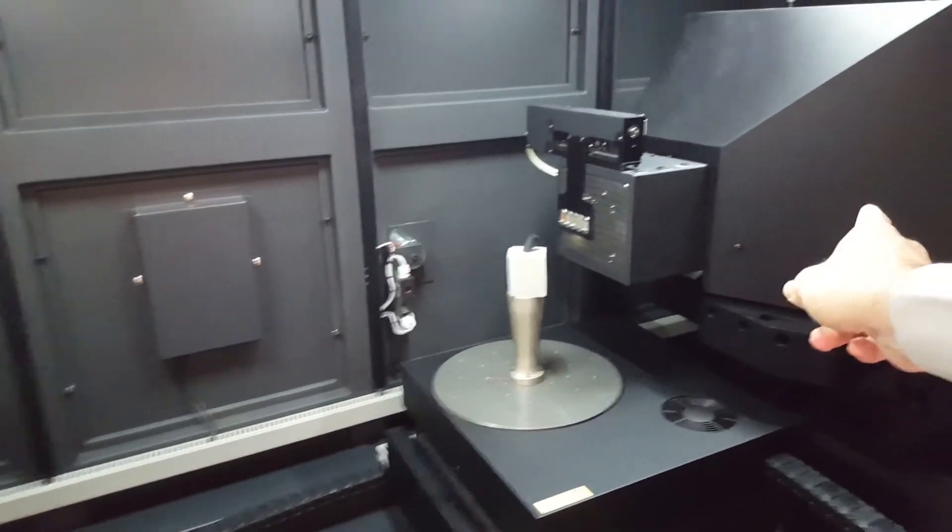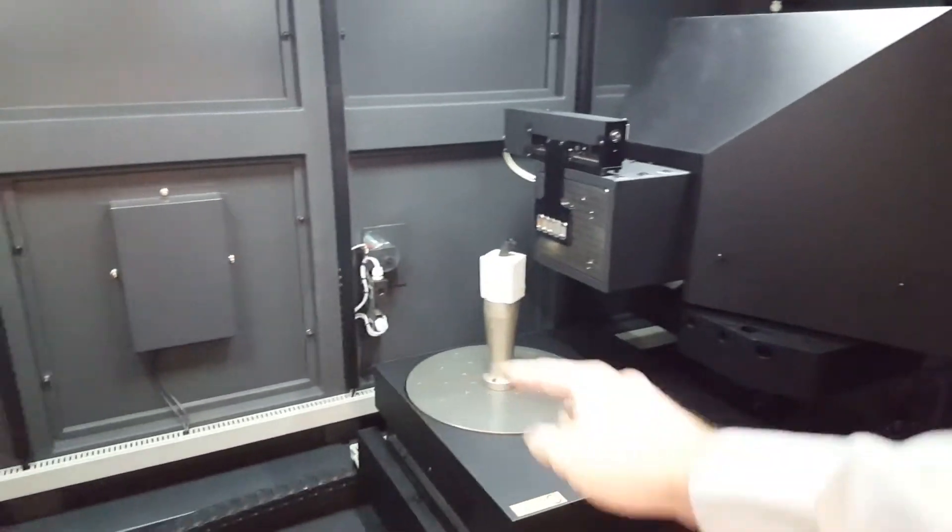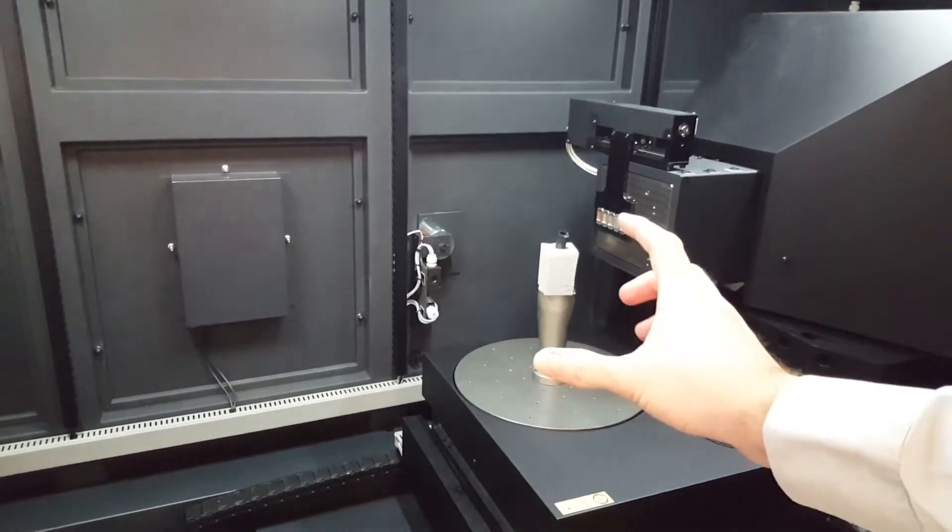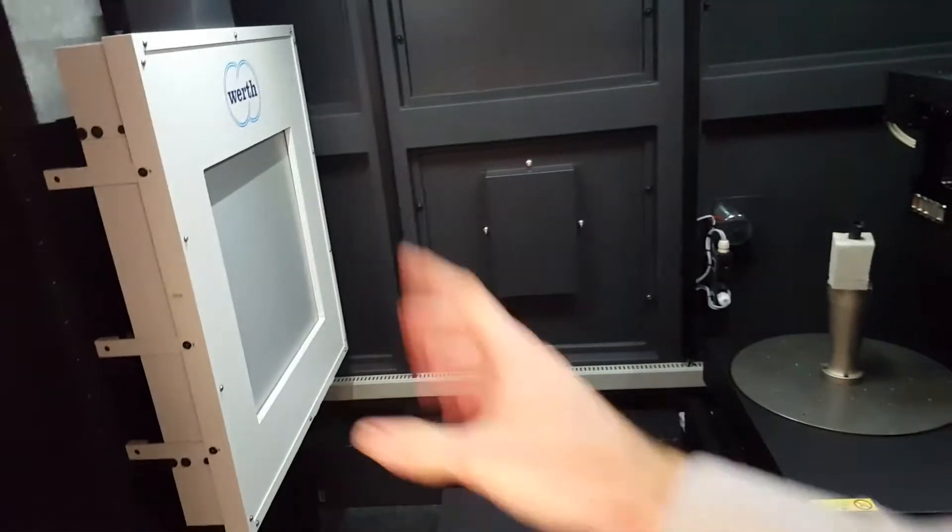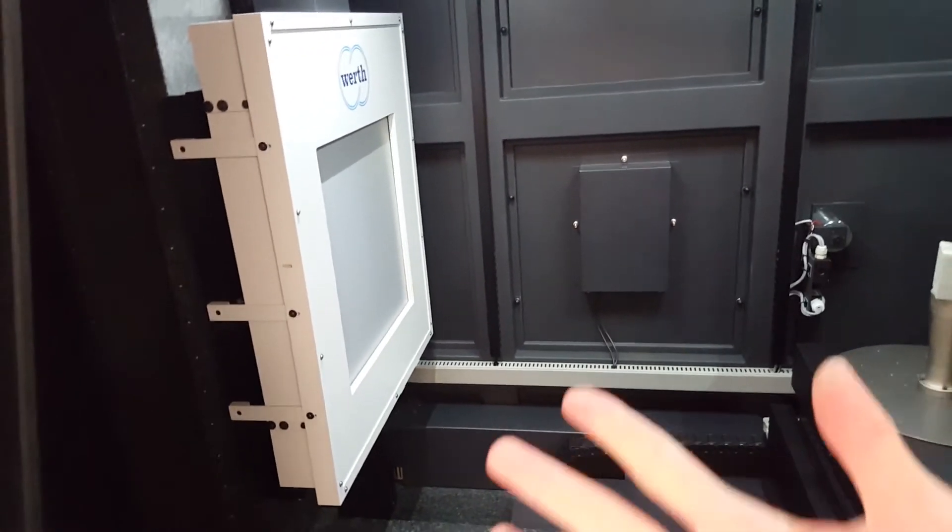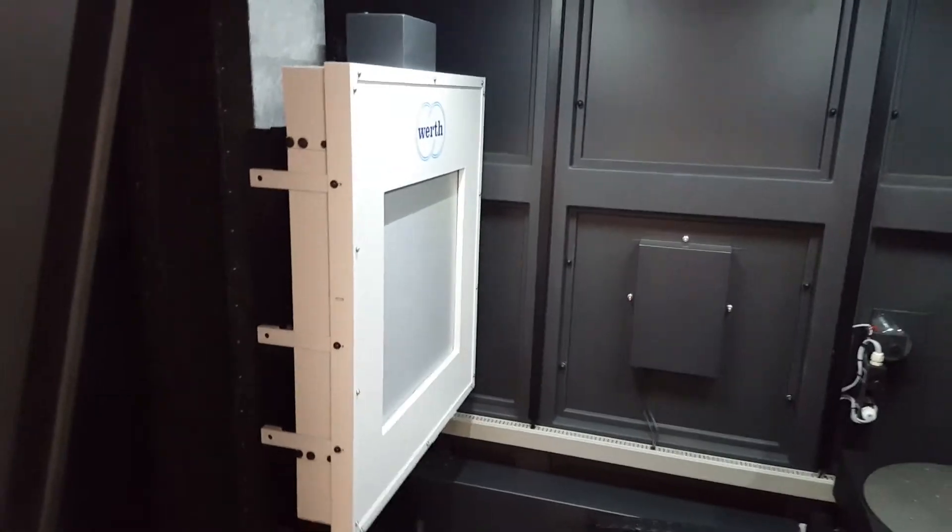That is the x-ray emitter, and then you have the turntable in the middle, and the x-ray goes through the part, and then is projected onto the detector.